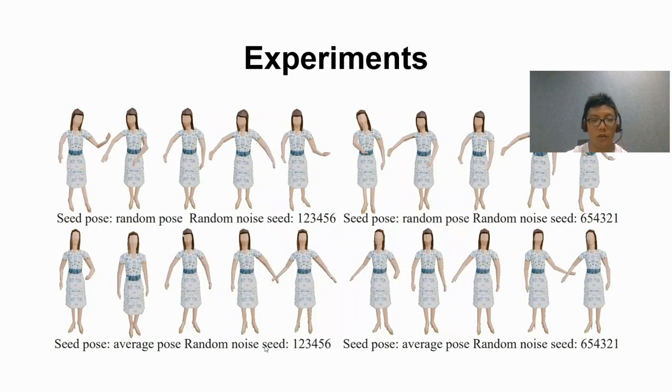Due to our model architecture, even for the same speech and style, different noise gestures and different seed gestures could generate different results, as shown in the figure. This is the same as real human speech that creates diverse co-speech gestures related to the initial position.